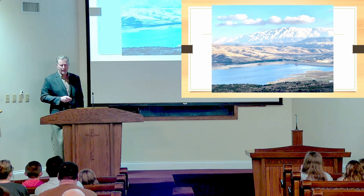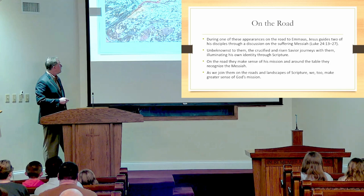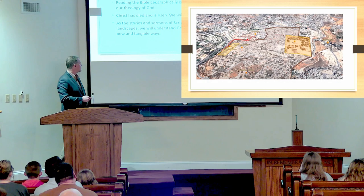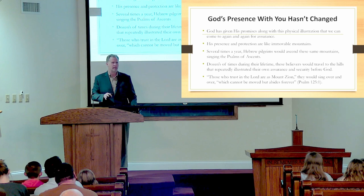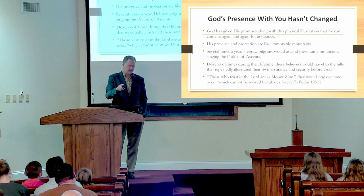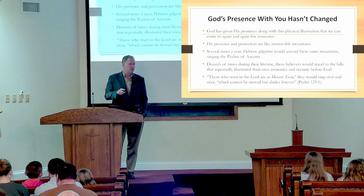Just like Moses led the children of Israel out of slavery, Jesus is going to lead us out of slavery to redeem us. These are lots of places — this is Mount Hermon where that event likely took place, the very northern part of Israel today. And when we think about the place where Jesus was killed, this is the Temple Mount. Golgotha was outside the city walls, which are highlighted here, and you can visit those places today. God's presence with you hasn't changed just like those places haven't changed — the Mount of Olives, the Kidron Valley. His presence and protection are like immovable mountains.